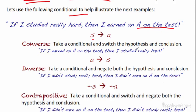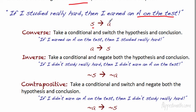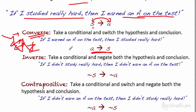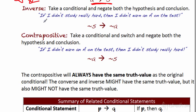The first related conditional is the converse — you switch the order of the hypothesis and conclusion. So 'If I studied really hard, then I earned an A' becomes 'If I earned an A on the test, then I studied really hard.' I remember converse by thinking of Converse sneakers — on the basketball court you'd switch directions fast. That's exactly what you're doing here: switching the order.